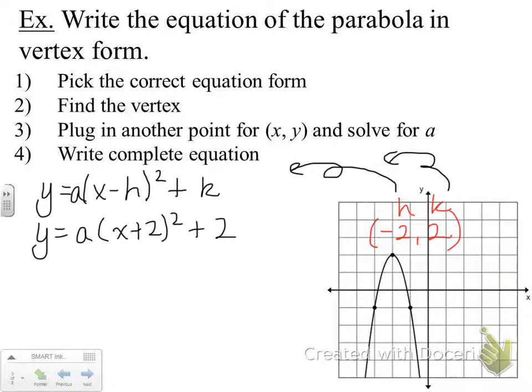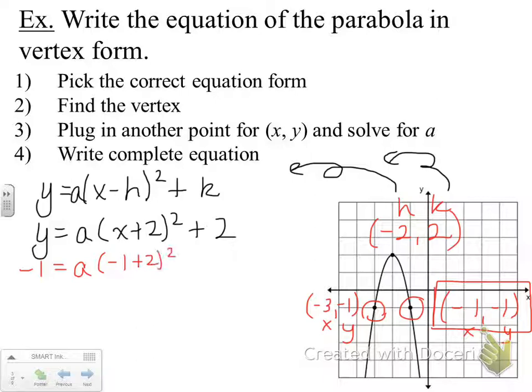Now, we want to pick one of these other two points on our parabola and use their coordinates. So we have a point at negative 1, negative 1. We have a second point here at negative 3, negative 1. And it really doesn't matter which one we pick. They're both just plain old x and y's. And I don't know, let's use this point here at negative 1, negative 1. So I'll put negative 1 in for the y, negative 1 in for the x, and we'll go ahead and solve this equation for a.